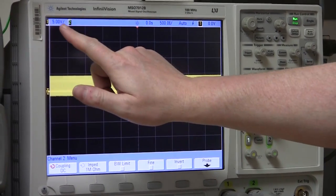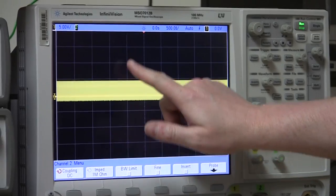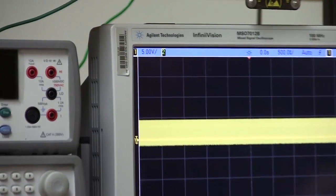And now, see this mark here? Five volts per division. Each one of these squares, vertically, is five volts.